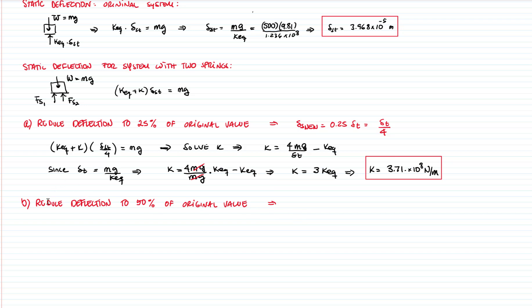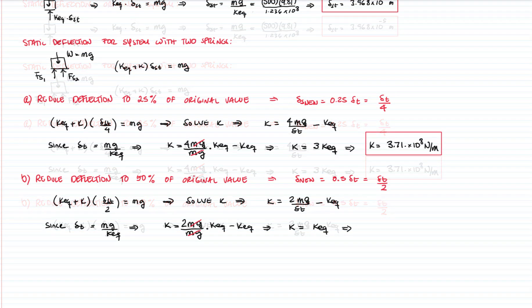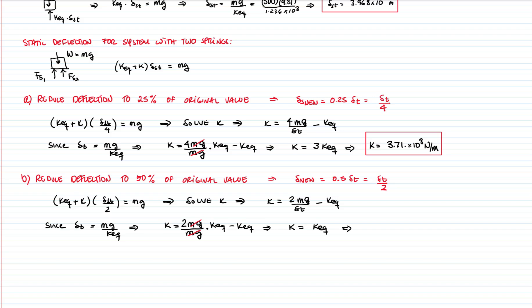Part B of the problem is to reduce deflection to 50% of the original value. Therefore, the new static deflection will be 0.5 times the original. We have a very similar equation as before, but instead of dividing the deflection by 4, we divide by 2. Solving for k, we get that the new spring constant equals the beam's equivalent spring constant, which is 1.236 times 10 to the 8 Newtons per meter.